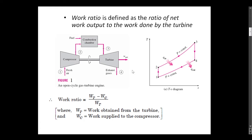Let us start. The work ratio is defined as the ratio of net work output to the work done by the turbine. Therefore, work ratio is equal to the net work expressed as WT minus WC, where WT is work obtained from the turbine and WC is work supplied to the compressor. This gives net work, that is WT minus WC, upon WT.